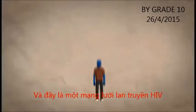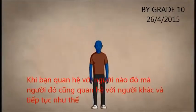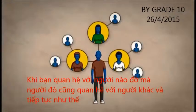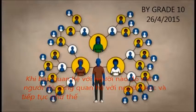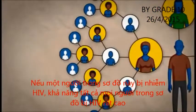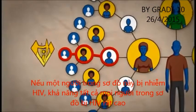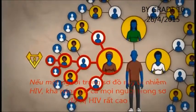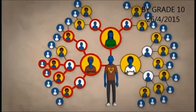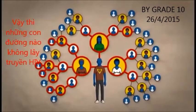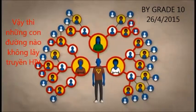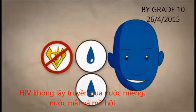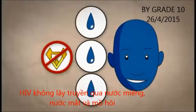Your sexual network is a picture of yourself, the people you've had sex with, the people they've had sex with, and so on. If any one person in your sexual network has HIV, everyone else in the network runs the risk of being infected. If your sexual network is large, there is a greater risk that the people in the network will spread HIV.